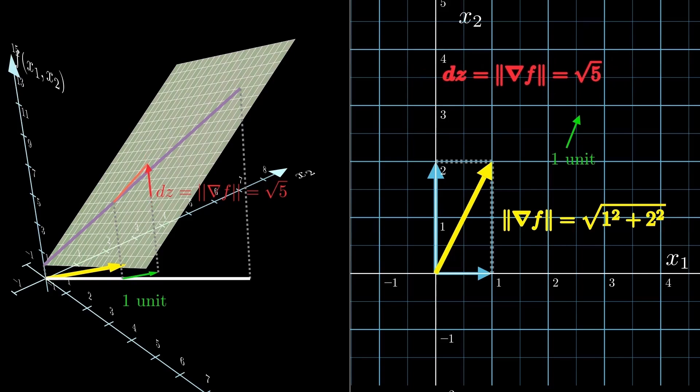It's not that the whole plane is tilted by the square root of 5—it's that in this special direction, f increases at the square root of 5 per unit step.